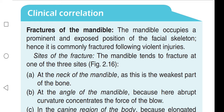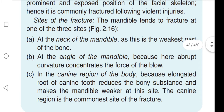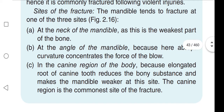The mandible tends to fracture at one of three sites. First, at the neck of the mandible, as this is the weakest part. Second, at the angle of the mandible, because the abrupt curvature concentrates the force of the blow. Third, in the canine region of the body, because the elongated root of the canine tooth reduces the bony substance and makes the mandible weaker at this site.